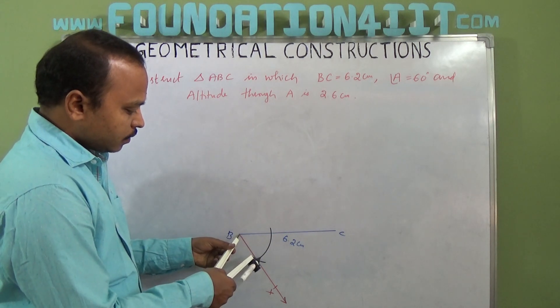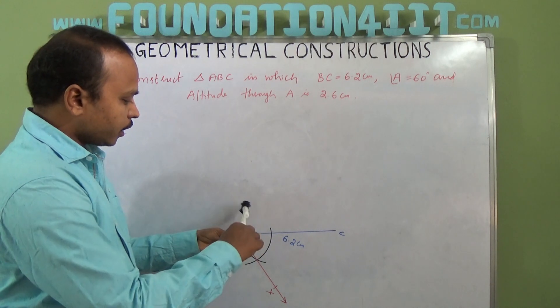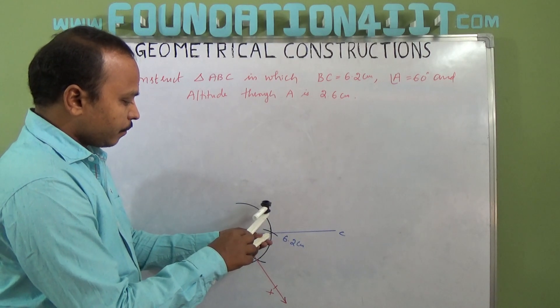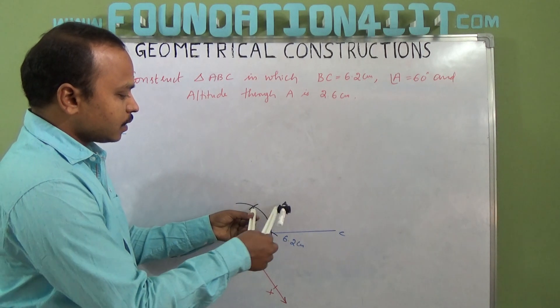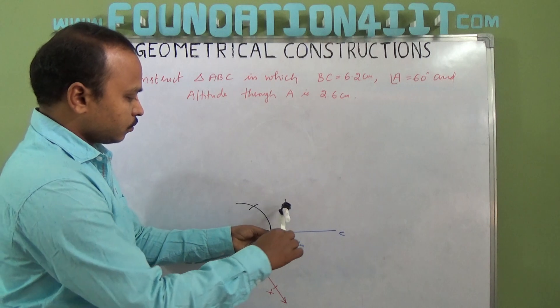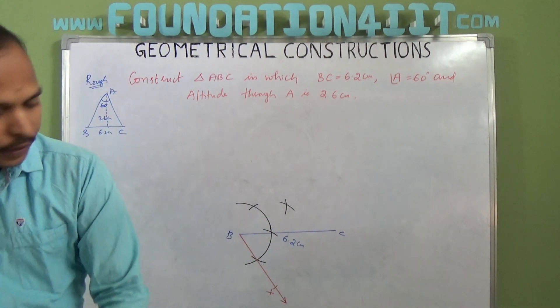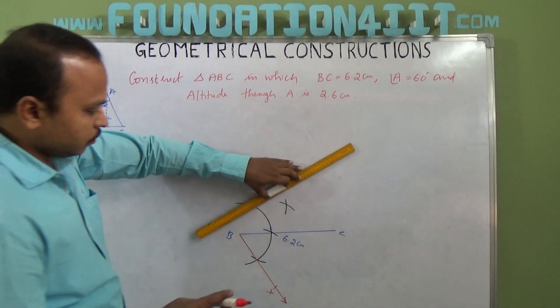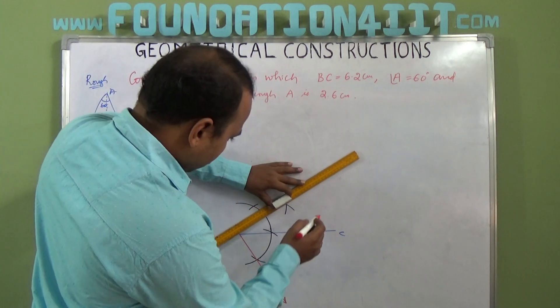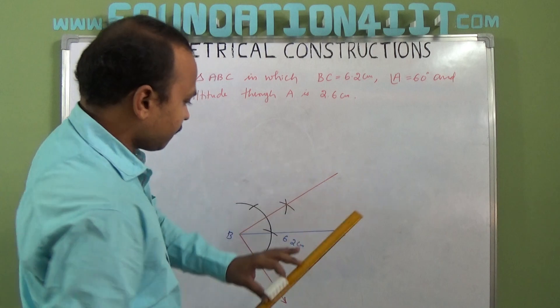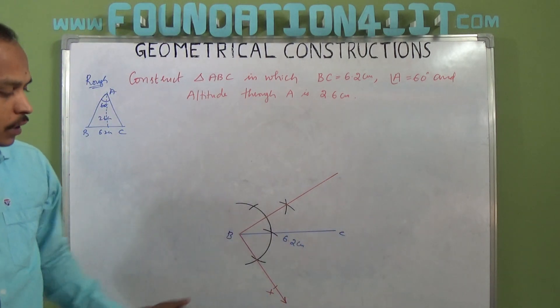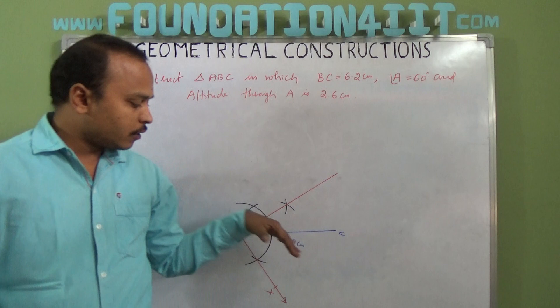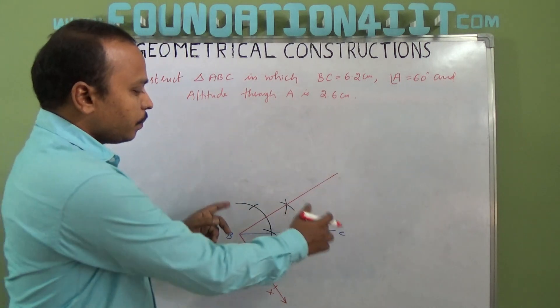Similarly, if you extend this, it's indirectly 30 degrees. Draw an arc from here, draw an arc again, basically at 60 and 90 because we need to construct a perpendicular line to BX. Whatever vertical angle is given, first you need to construct it downwards, then draw a perpendicular to that line.